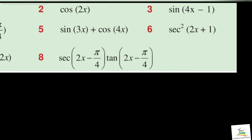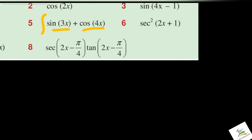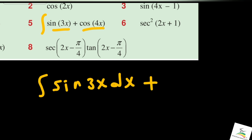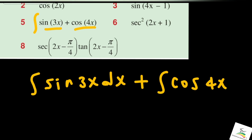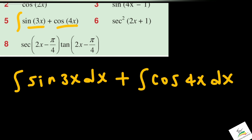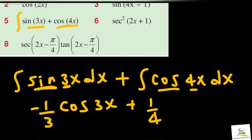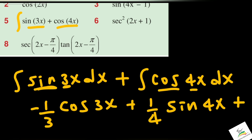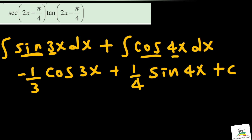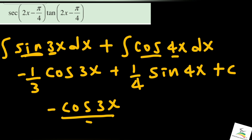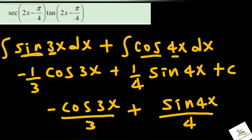Integration of (sin 3x + cos 4x) dx: split as integration of sin 3x dx plus integration of cos 4x dx. Sin 3x integrates to negative (1/3) cos 3x, and cos 4x integrates to (1/4) sin 4x. So the answer is: negative cos 3x over 3 plus sin 4x over 4 plus C.